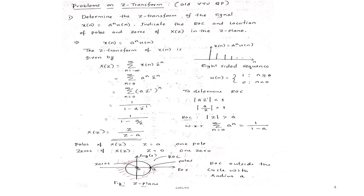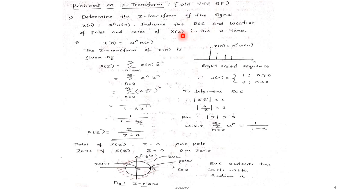We will discuss problems on Z-transform which have appeared in previous question papers. The first problem is: determine the Z-transform of the signal X(N) equal to E to the power N times U(N). Indicate the ROC and location of poles and zeros of X(Z) in the Z-plane. You have to obtain the Z-transform, mention the ROC (region of convergence), and mention the poles and zeros of X(Z) in the Z-plane.